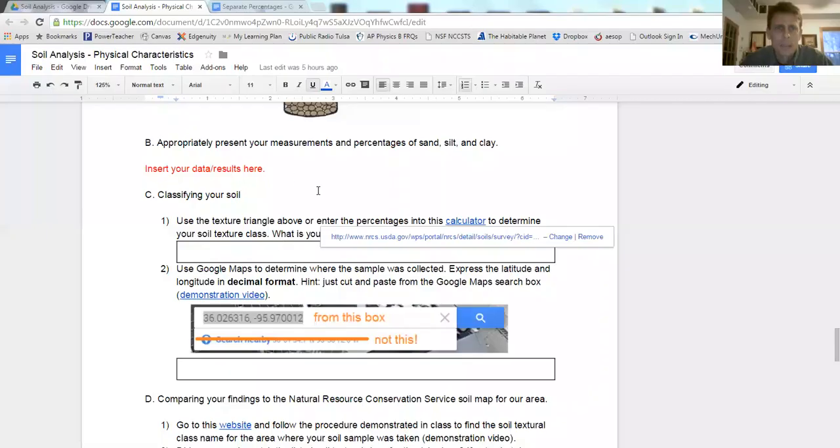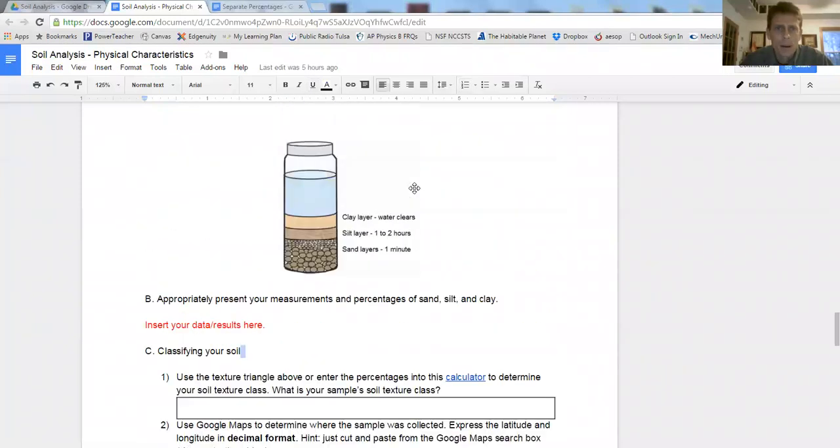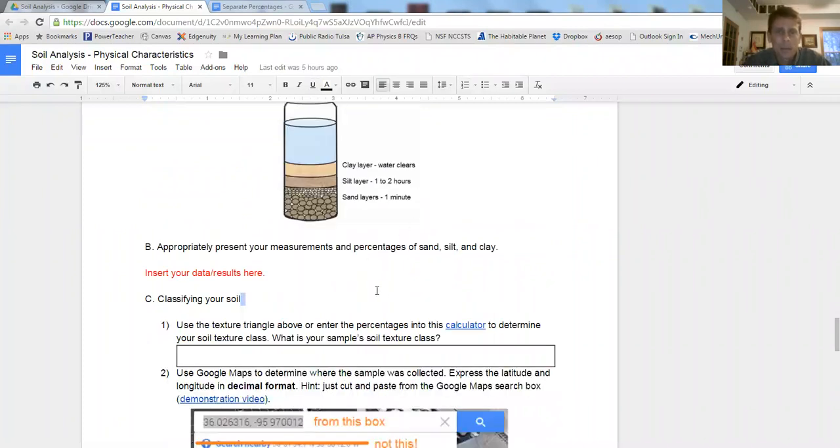Returning to our soil analysis activity with the physical characteristics, we are now going to take a look at determining our different percentages for our soil separates. We'll be using this example diagram just to give us some idea of the calculations that we're supposed to be doing. Whenever we're done with that, we will then go up to the soil texture triangle to determine the type of soil that we have.